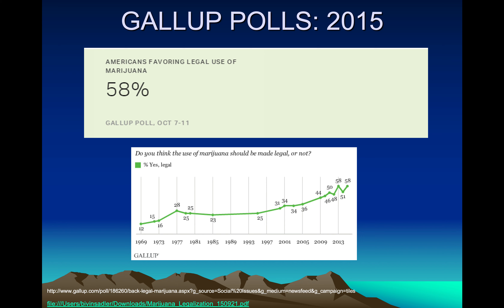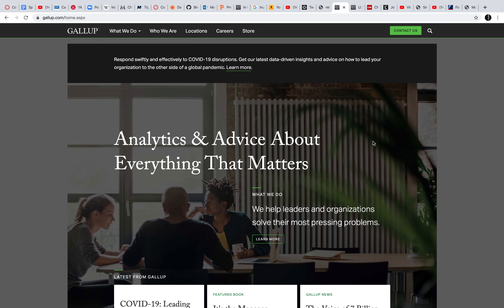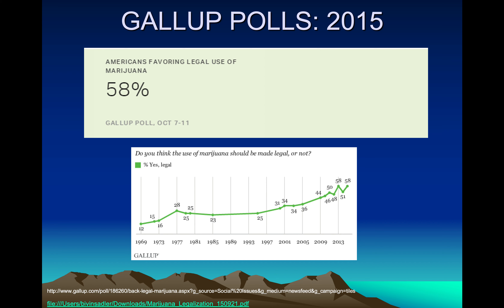Gallup was a company founded by George Gallup back in 1935. If you look at the fine print in news articles, in the newspaper, or on TV, you'll see that a lot of polls are conducted by Gallup. You can find them easily by searching Google Gallup. They've broadened to looking at business analytics and social sciences. The Pew Research Center is another one we'll look at some examples from today.